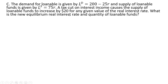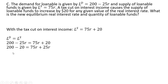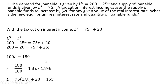In Part C, we have the same demand and supply, but a tax cut on interest income causes the supply of loanable funds to increase by $20 for any given value of the real interest rate. We add $20 to the supply equation. Setting up the equilibrium condition and simplifying — adding 25R to both sides, subtracting $20 from both sides, and dividing through by 100 — this causes the real equilibrium interest rate to fall, and the equilibrium quantity of loanable funds to equal $155.